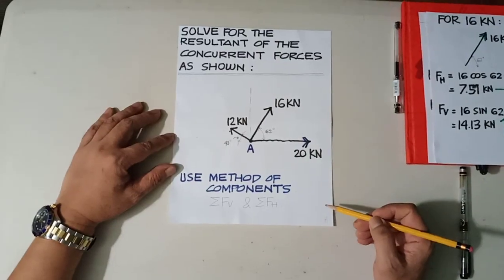Hello guys, today we're going to solve an example of concurrent forces — how to find the resultant force of forces acting at one point. When forces are acting at one point, they are called concurrent forces. We're going to use the method of components.